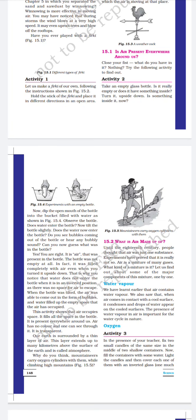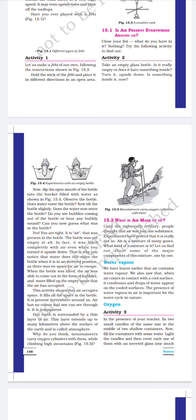Our earth is surrounded by a thin layer of air called the atmosphere, which extends up to many kilometers above the earth's surface. There are six layers of the atmosphere. The first layer, where we live, is called the troposphere, then the stratosphere, and the outermost layer is the exosphere.